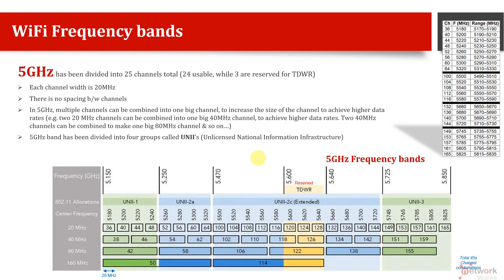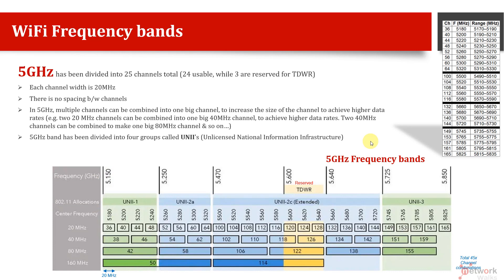That's the confusing point for most students. If we look at the whole distribution of all frequency ranges or channels in the 5 GHz band, we can see there are totally 45 channels. But if we look at the standard 20 MHz channels, there are 25 total and 24 of those are usable.